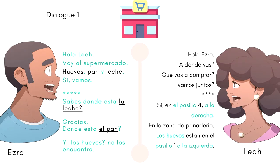Diálogo 1. Hola Lea. — Hola Ezra. — ¿A dónde vas? — Voy al supermercado. — ¿Qué vas a comprar? — Bueno, hoy... termina... huevos, pan, leche. — ¿Vamos juntos? — Sí, vamos.